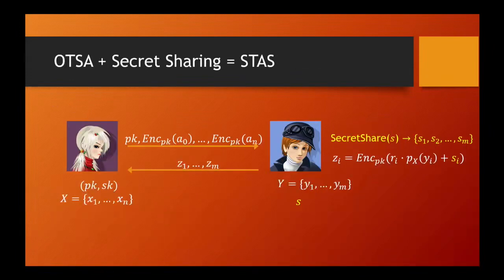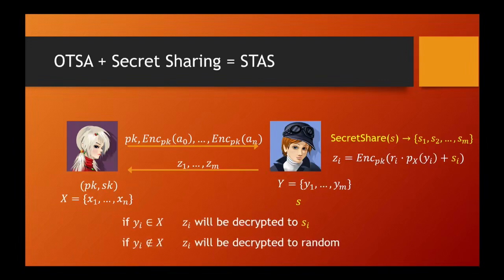To construct STAS, we illustrate with our OTSA based on oblivious polynomial evaluation. The sender splits the secret S under some access structure and uses the set of shares as the data items in OTSA. If a particular sender index yi is also in the receiver index set, then the receiver gets the corresponding secret share. Otherwise, it is a random value.